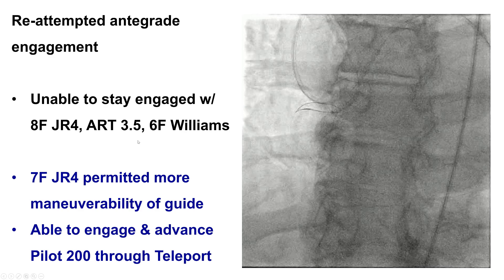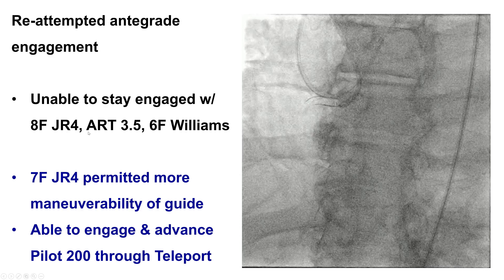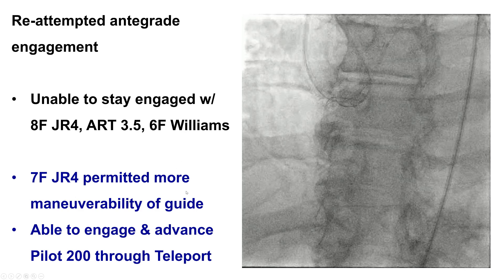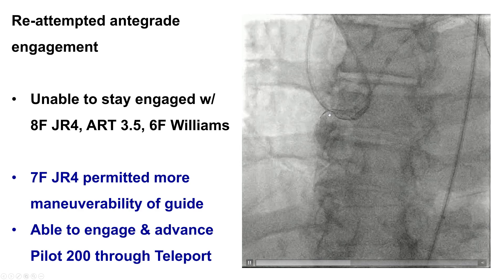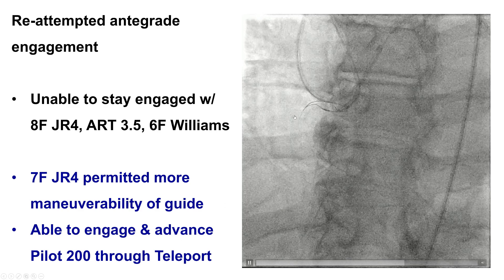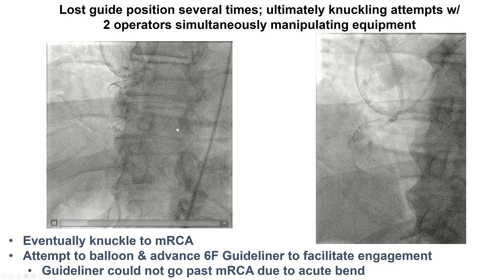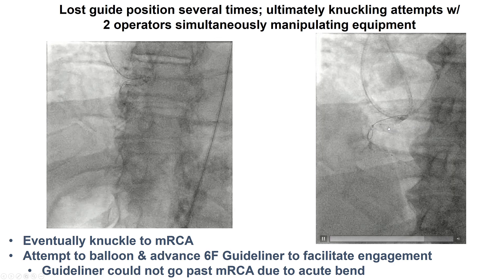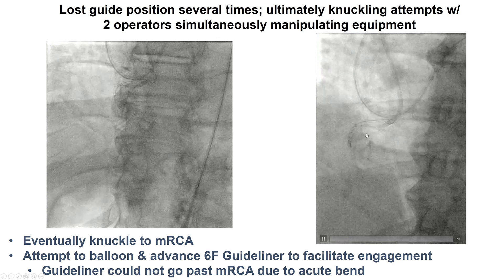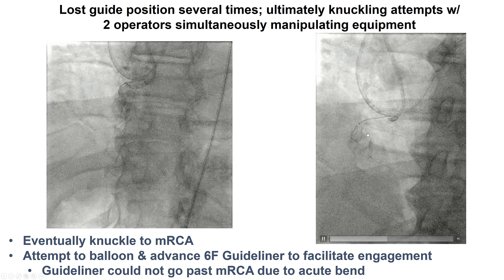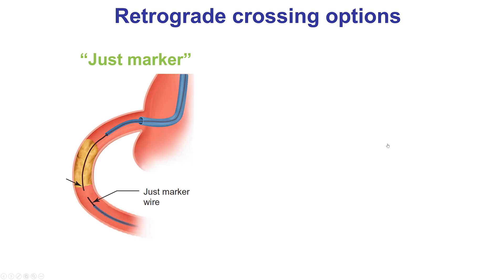We tried again several guide catheters — JR4, R35, Williams — and eventually a 7 French JR4 seemed to work the best. We were able to engage the vessel and advance a Pilot 200 through the Teleport microcatheter. Engagement was challenging, but after multiple try-and-fail attempts, we were able to advance a GuideLiner to the proximal right coronary artery. Now we had antegrade equipment and retrograde equipment in place trying to cross retrograde.